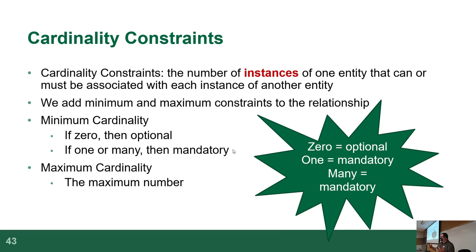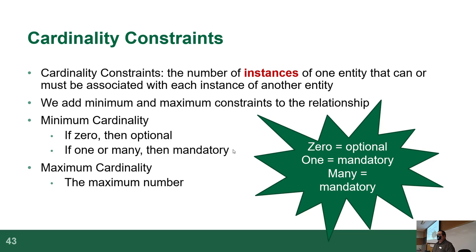For the minimum, it's either zero, which is optional, or one, which means it's mandatory. The maximum cardinality means at least one, with a maximum of one or many. There is no such thing as two, three, or four as a maximum — it's either a maximum of one or many. There's nothing outside of those two options for the maximums.